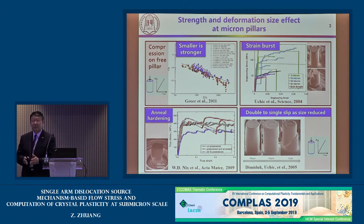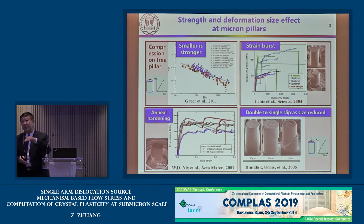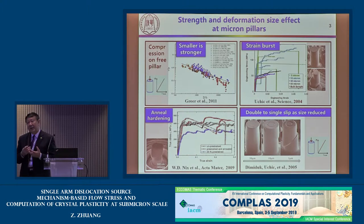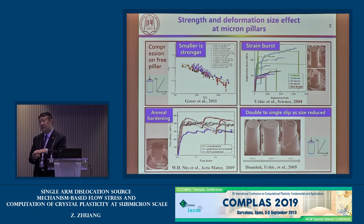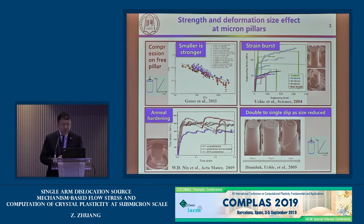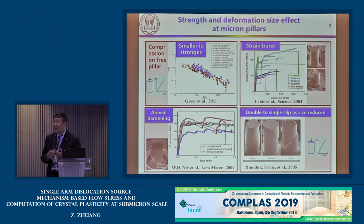For smaller pillars, you can find asymmetry. Another experiment shows the effect of temperature change. If the pillar undergoes temperature annealing, in conventional classical materials, annealing causes softening. But for smaller pillars and smaller samples, annealing makes them stronger. All of these new features show different mechanisms for plasticity.